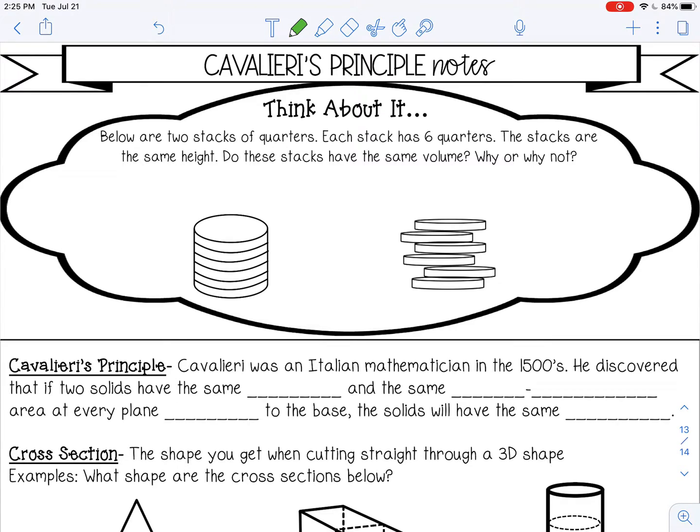Welcome to this lesson on Cavalieri's principle. Let's think about this problem first. Below are two stacks of quarters and each stack has six quarters each. The stacks are the same height. Do these stacks have the same volume? Why or why not?